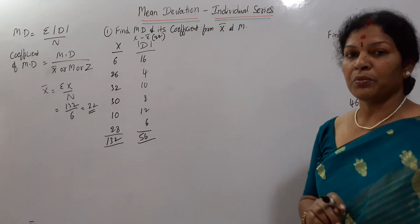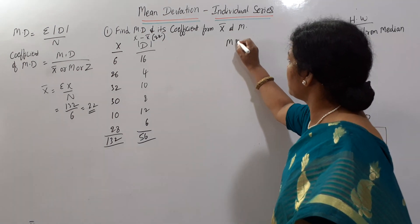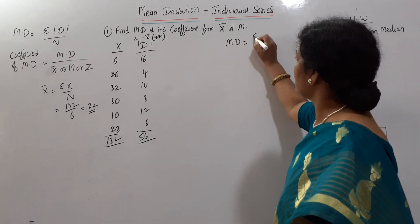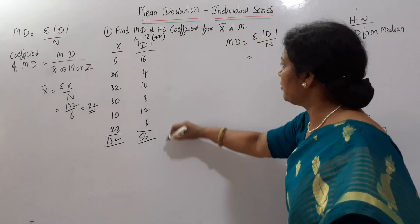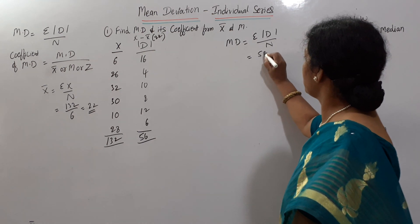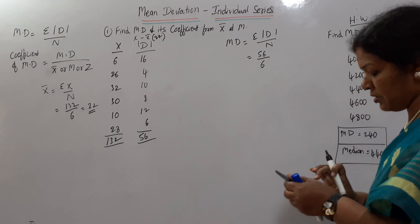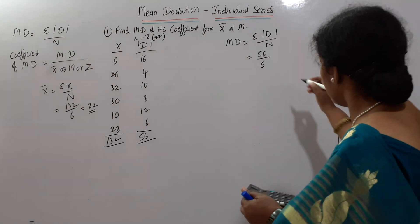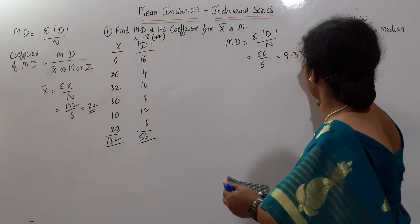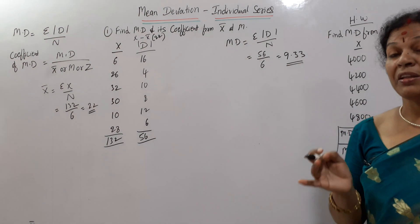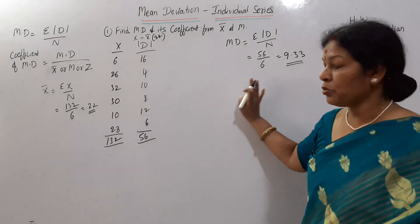The total σ|D| is 56. Now we apply the formula. Mean deviation = σ|D| by N = 56 divided by 6, which comes to 9.33. So 9.33 is the mean deviation when we take deviations from the arithmetic mean X̄.